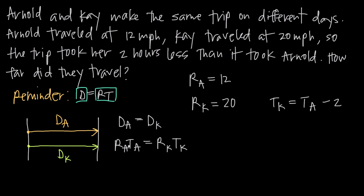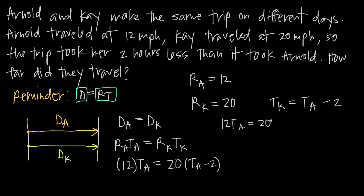With these three pieces of information, we can plug into the rate times time equation. R sub A is 12, so we plug that in and leave T sub A as is. R sub K is 20, and T sub K equals T sub A minus 2. This gives us 12 times T sub A equals 20 times open parenthesis T sub A minus 2 close parenthesis, which simplifies to 12 T sub A equals 20 T sub A minus 40. Subtracting 20 T sub A from both sides gives negative 8 T sub A equals negative 40, so dividing both sides by negative 8, T sub A equals 5 — Arnold's trip took 5 hours.